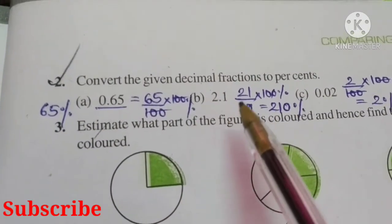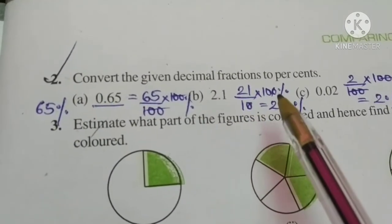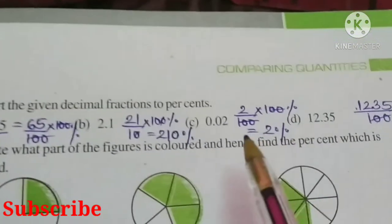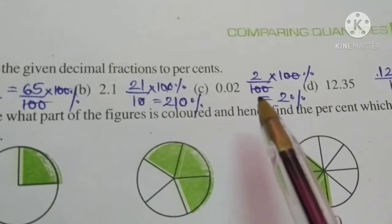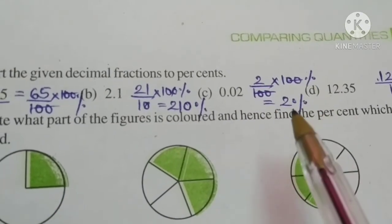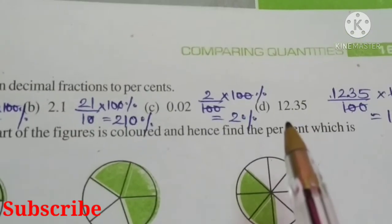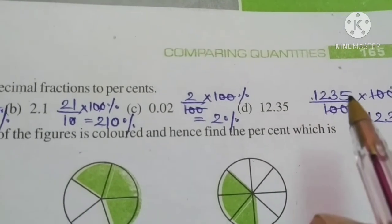Part (b): 2.1, that is equal to 21/10 times 100 percent, so we get 210 percent. Part (c): 0.02, that is 2/100 times 100 percent, we get 2 percent. Last one, part (d): 12.35, that is 1235/100 times 100 percent, we get 1235 percent.